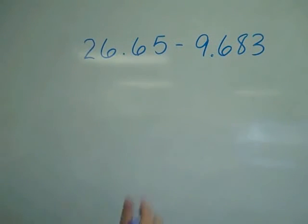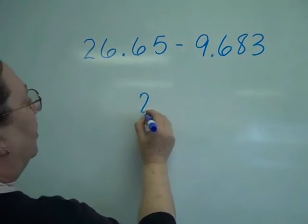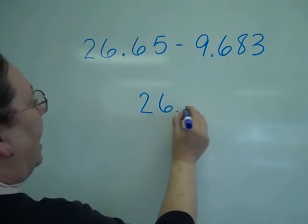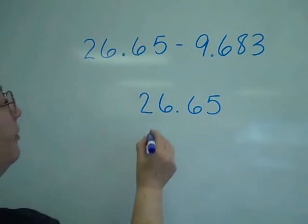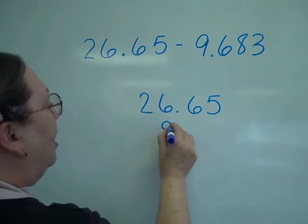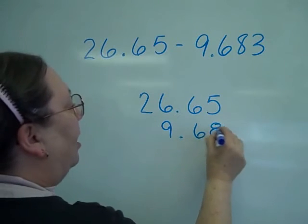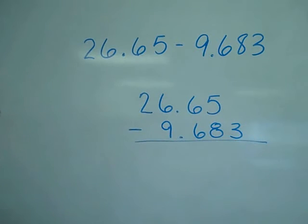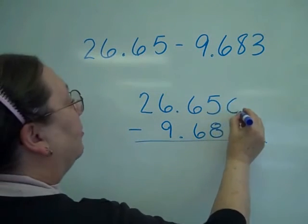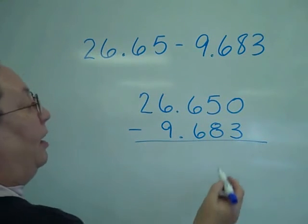One more example. I'm going to line up the decimal points. So I have 26 and 65 hundredths. I'm going to subtract the nine and 683 thousandths. Again, fill in any zeros because you definitely want to make sure it's all lined up. So once again I'm going to have to do some borrowing.